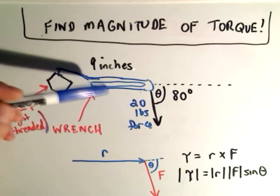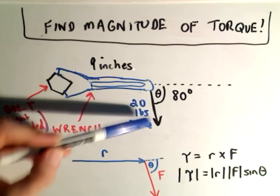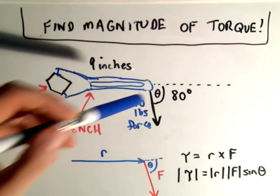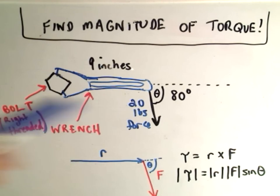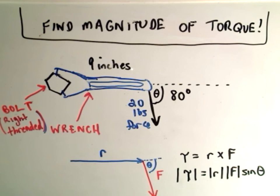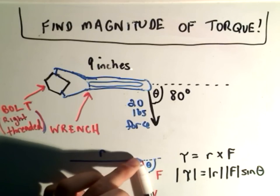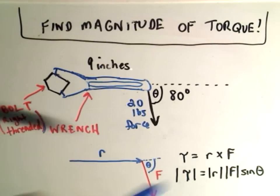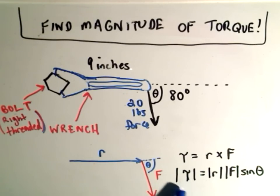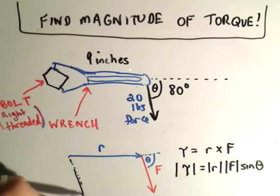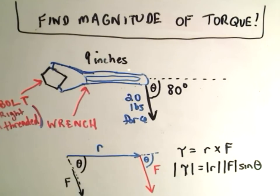Suppose you have a 9-inch wrench and you're pushing down with 20 pounds of force, at an angle of 80 degrees to the wrench — so you're not pushing exactly straight down; you're applying the force not quite perpendicular. If we represent the wrench by a vector R and the force by a vector F, torque equals the cross product of these two vectors. The magnitude of the torque equals the magnitude of R times the magnitude of F times sine of the angle between them, which is 80 degrees.